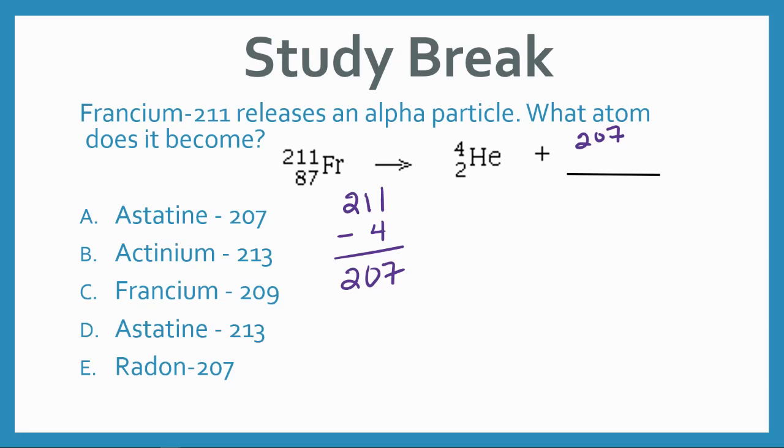And we know that it's going to have a mass, so it changes its mass by four. We know its atomic number is going to decrease by two, because two of those subatomic particles are protons.